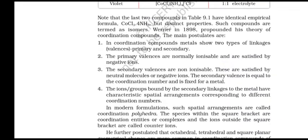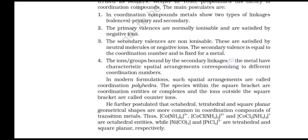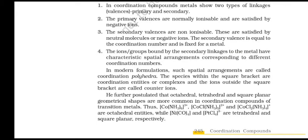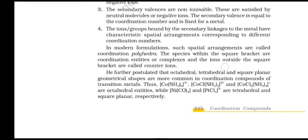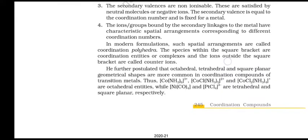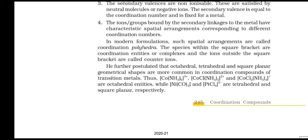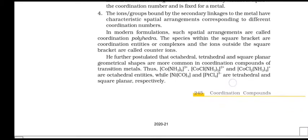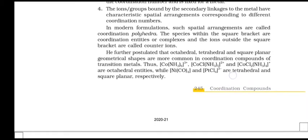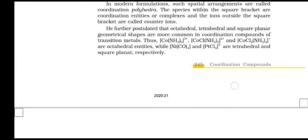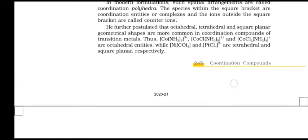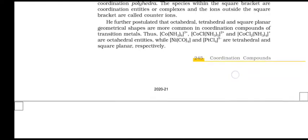Werner, in 1898, propounded his theory on coordination compounds. The main postulates are: in coordination compounds metals show two types of linkages — primary and secondary valence. The primary valences are normally ionizable and are satisfied by neutral molecules or negative ions. The secondary valence is equal to the coordination number and is fixed for a metal. The ions or groups bound by secondary linkages to the metal have characteristic spatial arrangements corresponding to different coordination numbers. In modern formulations, such spatial arrangements are called coordination polyhedra. The species within the square bracket are coordination entities or complexes, and the ions outside the square bracket are called counter ions.